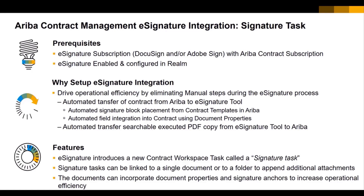The feature that actually drives this integration is called a signature task. For those familiar with workflow management in the contract management modules, you'll know that you have approval tasks and review tasks. A signature task is a new feature that's available once you turn this feature on. Signature tasks can be linked to a single document or a folder, and the documents can incorporate document properties as mentioned prior.